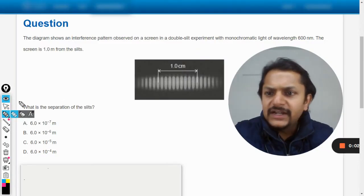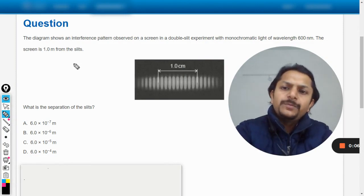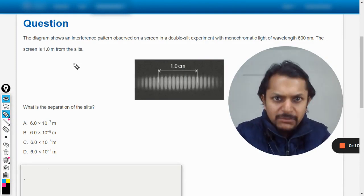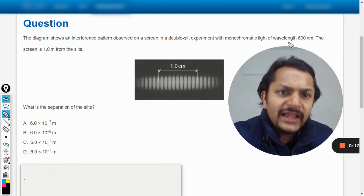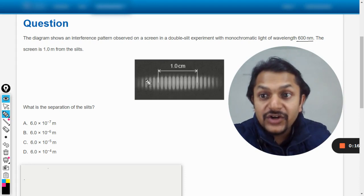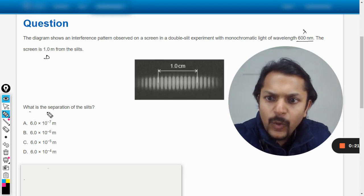Okay dear students, let us see what is there in this question. The diagram shows an interference pattern observed on a screen in a double slit experiment with monochromatic light of wavelength 600 nanometers. The screen is one meter from the slit. So this is the capital D, this is wavelength lambda. What is the separation of these slits?